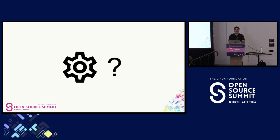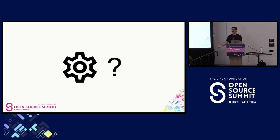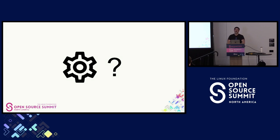Engineers have unit tests, integration tests, end-to-end tests to make sure that the code and product function as expected. Where are the tests for the docs? Where's the automation for the docs? And they said, Manny, we don't have that — that's what we have you for. And I said, absolutely not. I'm not going to dedicate my time to fixing regressions that other people caused when what I shipped was accurate in the first place. But I didn't have the bandwidth to do anything about it.